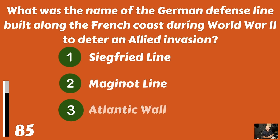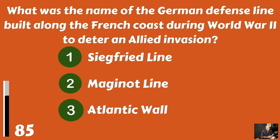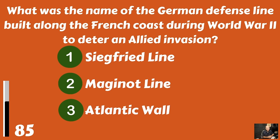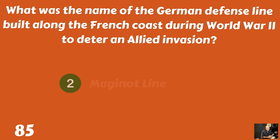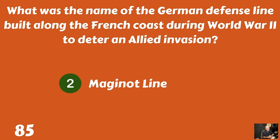What was the name of the German defense line built along the French coast during World War II to deter an Allied invasion? The Siegfried Line? The Maginot Line? Or the Atlantic Wall? And that would be the Maginot Line.